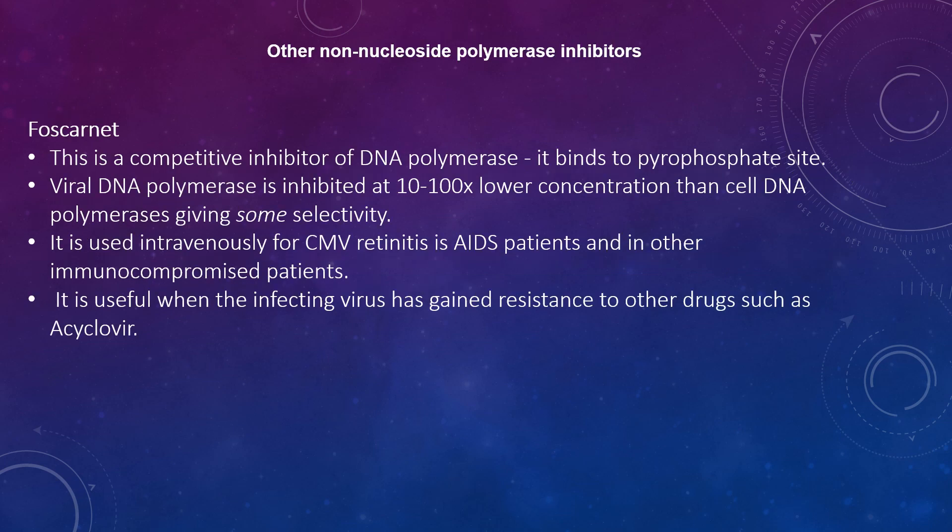Foscarnet is a competitive inhibitor of DNA polymerase that binds to the pyrophosphate site. Viral DNA polymerase is inhibited at 10–100-fold lower concentrations than cellular DNA polymerases, giving some selectivity. It is used intravenously for CMV retinitis in AIDS patients and in other immunocompromised patients. It is useful when the infecting virus is gaining resistance to other drugs such as acyclovir.